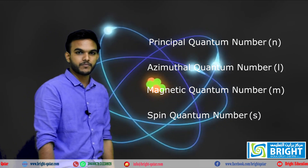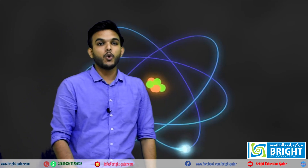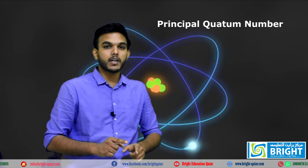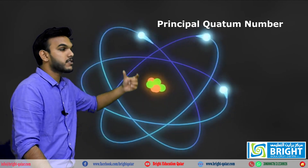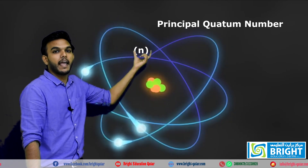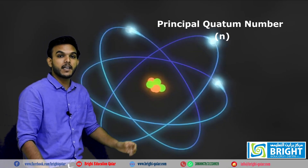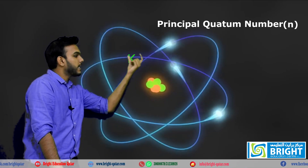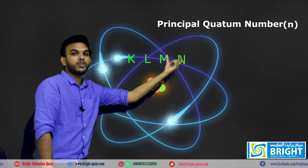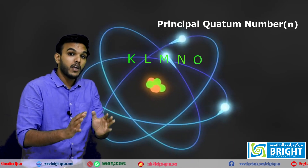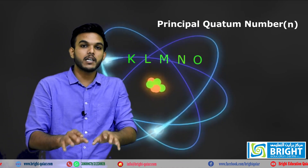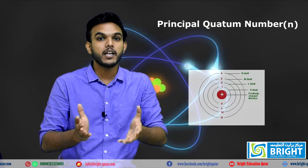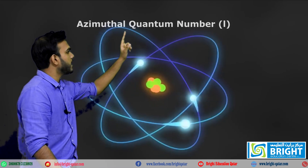First, we discuss the principal quantum number, represented by the small letter n. The principal quantum number explains about the shell. Shells are represented as K, L, M, N, O, and so on. From the principal quantum number we get the size — that means it represents the shell number.